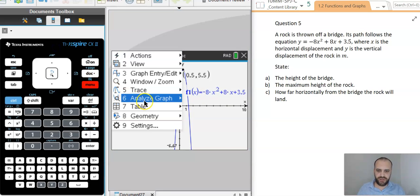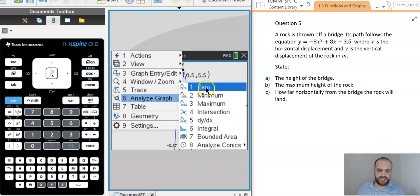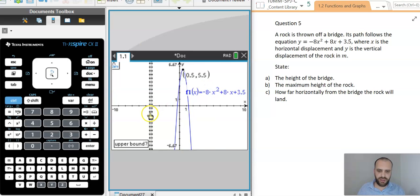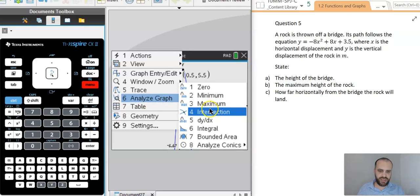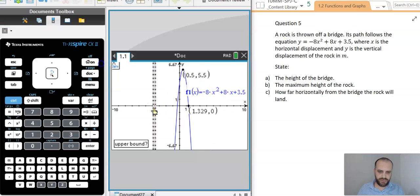We can also analyze our graph and look for our zeros. Again, a lower bound, an upper bound. And you can see it spat out 1.0, 1.329. If I want my other one, I just analyze my graph again, and this time I'll just go from here to here, because that'll pick up that 0 right there.